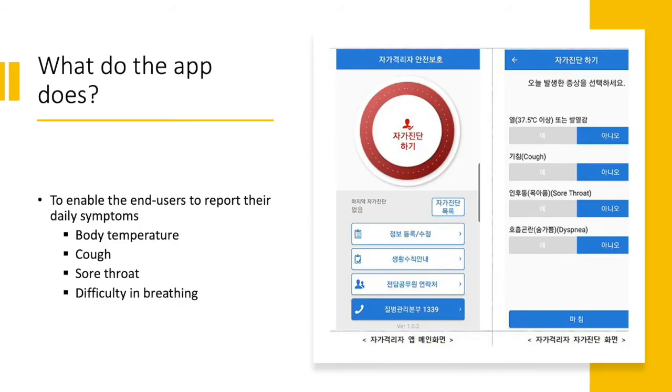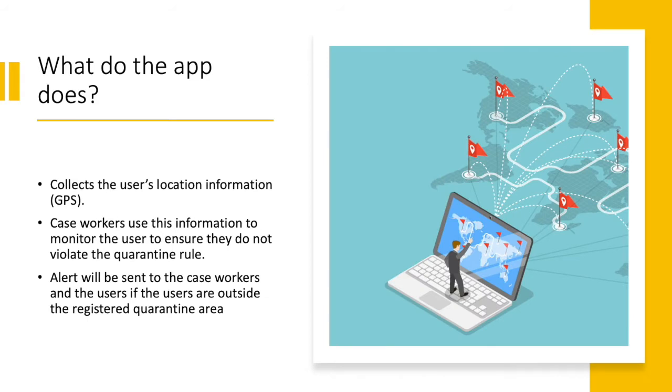In this mobile application, it enables the end users to report their daily symptoms such as body temperature, whether they have cough, sore throat, or difficulty in breathing. It also collects the user's location information by using GPS in their smartphone. By this information, the caseworkers can monitor those in quarantine and determine whether they stay at home or their quarantine area or are leaving their quarantine area.